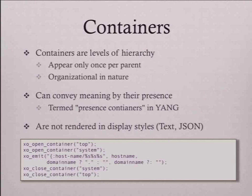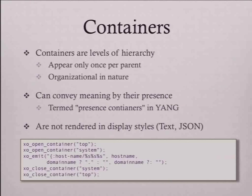There are a set of open and close functions to open containers and lists. In this example, we're opening a container called 'top' and then a container called 'system', emitting some output, and then closing those containers. Containers are organizational - they're how to separate things into meaningful hierarchy. In your code, the open containers and closed containers should match. If you have the warn flag on, it will warn you when that's not true. In general, when you close a container it will close to that level - so if I was missing a close-container-system, I would get a warning and the right thing would happen.